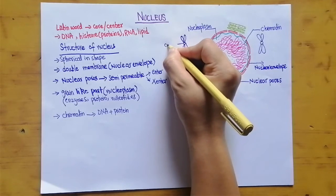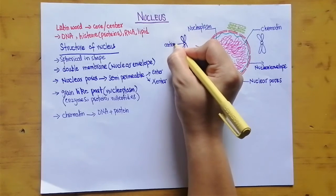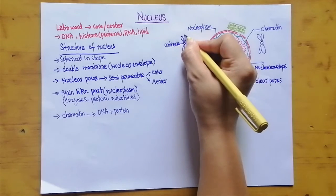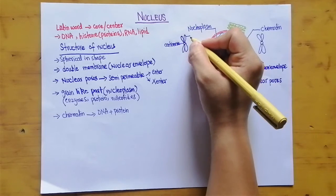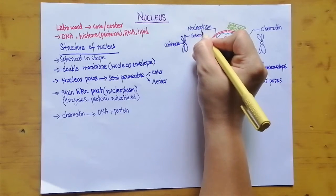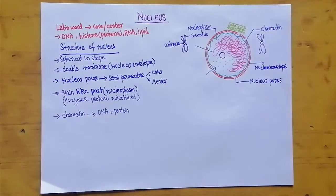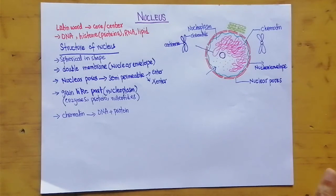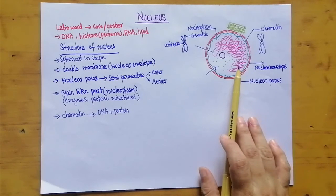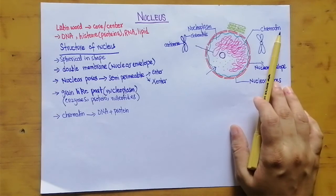A chromosome has a centromere and chromatids. However, if the cell is not dividing, you cannot observe the chromosomes — you will only see the thread-like structure known as chromatin.